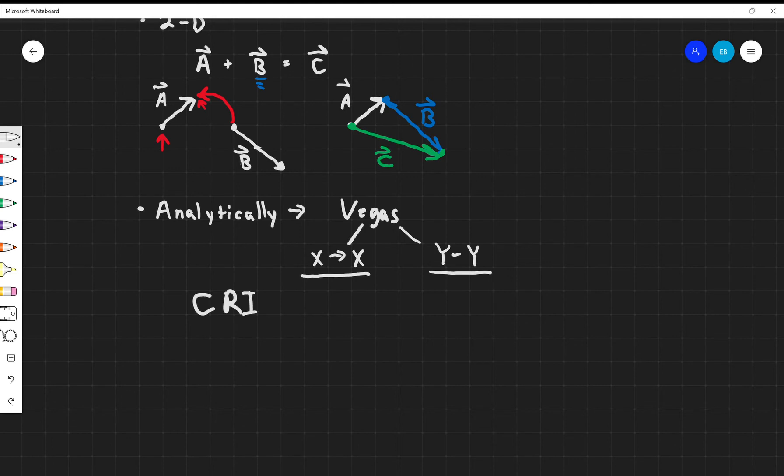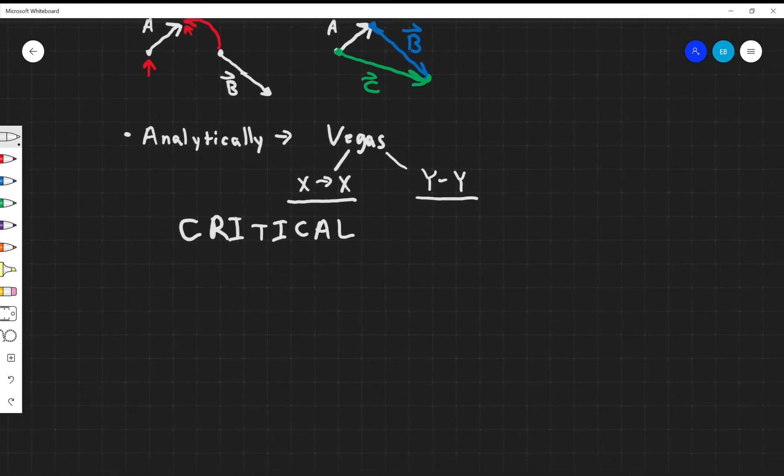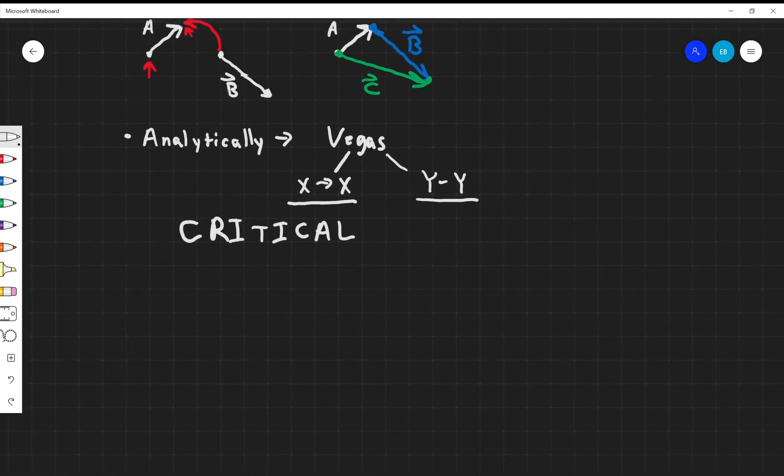I cannot emphasize how important it is that you get good at doing this stuff. You have to be able to do this. You will not pass physics if you cannot figure out these kind of vector notations. This is very fundamental. So let's draw a coordinate system.